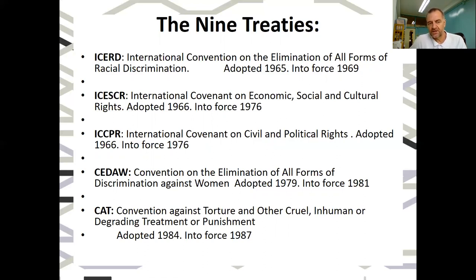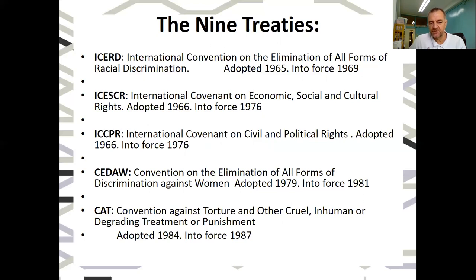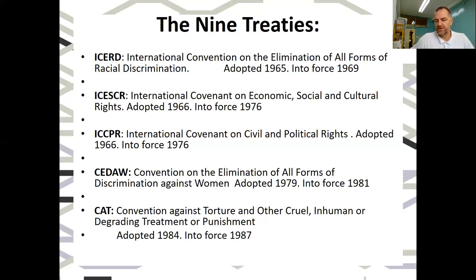There is a story behind why ICERD was the first treaty, which we'll look at when we examine the UDHR. After ICERD come the two covenants — ICESCR and ICCPR — which are the codification of the Universal Declaration of Human Rights. The UDHR is a declaration, not a treaty, so it's not fully legally binding like ICESCR and ICCPR, which were adopted in 1966 and came into force in 1976 — about 28 years after the UDHR in 1948.